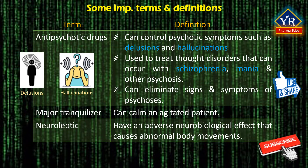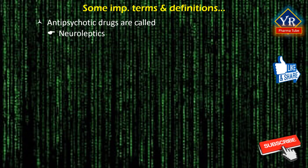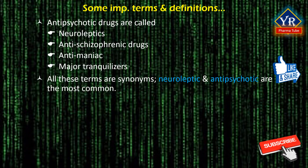These drugs have several different names including antipsychotic, major tranquilizer, and neuroleptic. The term antipsychotic is used where they can eliminate signs and symptoms of psychosis. The word major tranquilizer is applied when they calm an agitated patient. The term neuroleptic is employed when they have adverse neurobiological effects that cause abnormal body movements. Antipsychotic drugs have thus been called neuroleptics, antischizophrenic drugs, antimaniac drugs, and major tranquilizers — all these terms are synonymous. Neuroleptic and antipsychotic are the most common.